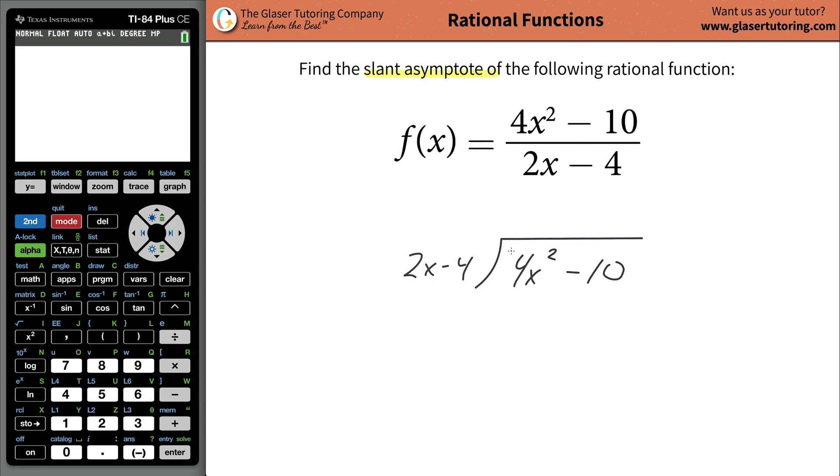Now what you're going to do is look at the highest power and its coefficient of x in that numerator, which is known as the dividend, and divide it by the highest power of x in your denominator, or the divisor. So 2 goes into 4 two times, x goes into x squared x times, so this is the quotient of that division. That goes on the top: 2x.